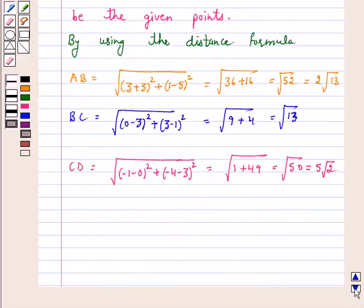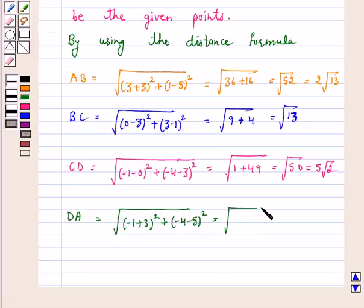Now distance DA is equal to square root of (-1+3)² + (-4-5)². So this is equal to 4 + 81 which is equal to square root of 85.